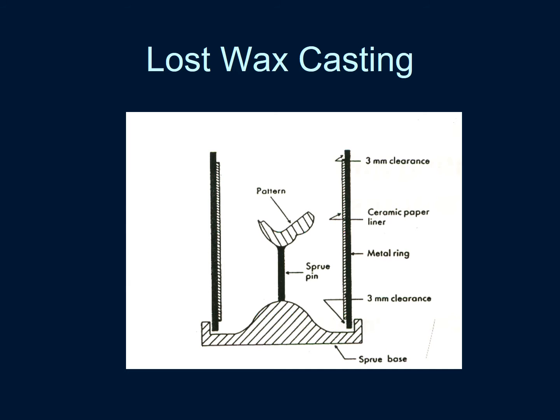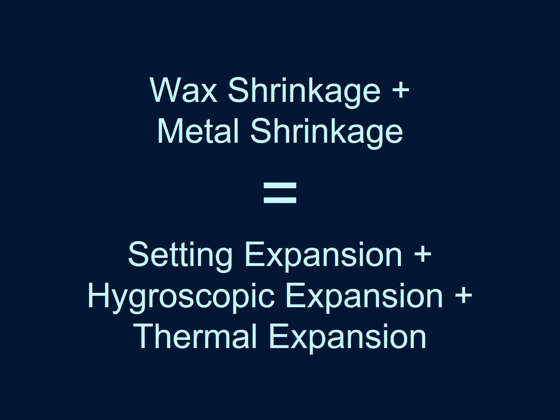Also, they are used as a base in the production of ceramic restorations such as veneers, crowns and inlays. The wax and metal shrinkage during this process will be later compensated by the setting expansion, hygroscopic expansion and thermal expansion. The aim is to produce a restoration that will be a perfect fit.